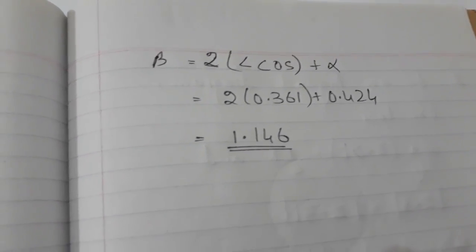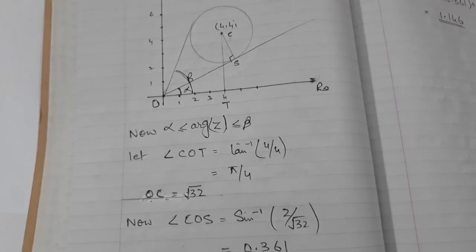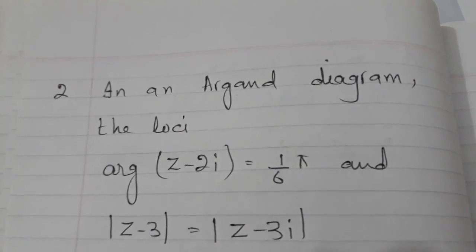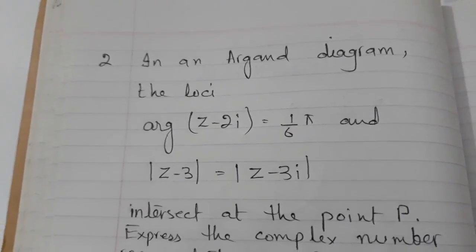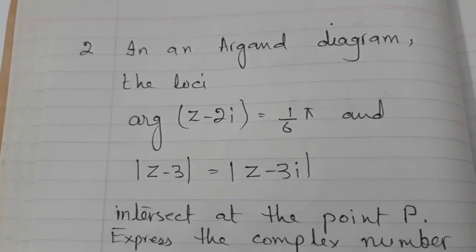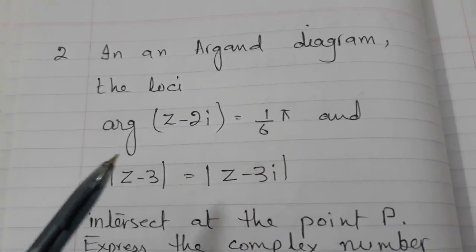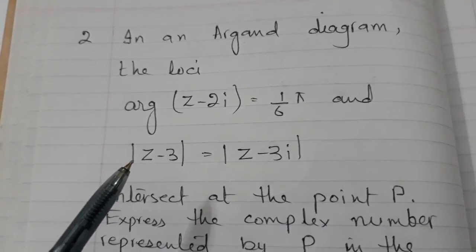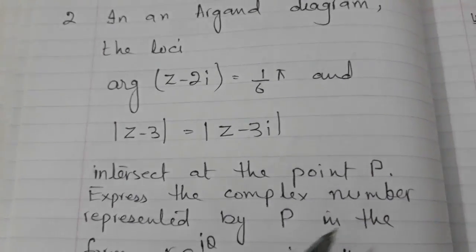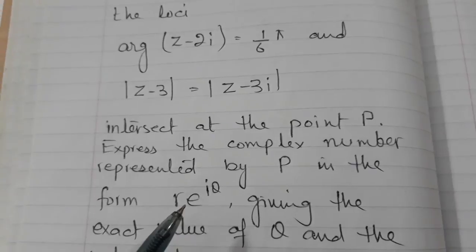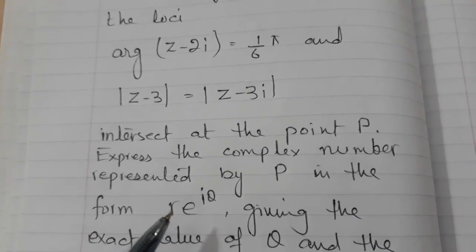Let me show the diagram once again so there is no confusion. Now let's see another example from a past paper question — this is an interesting one. In my experience, students find this question a little challenging. In the Argand diagram, you draw these two loci, and the question says they will intersect at point P. You have to find that point P and express it in exponential form.